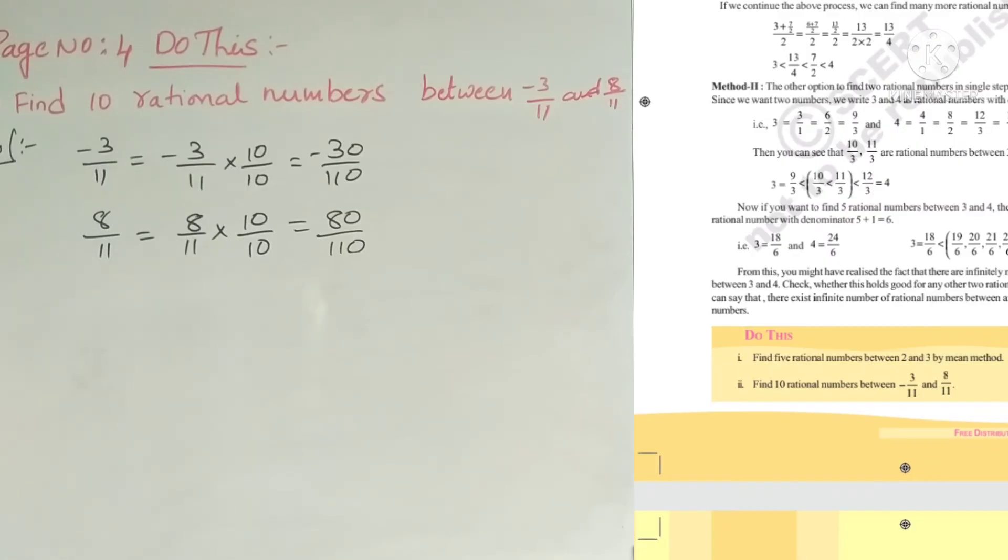So 8 by 11 also multiply by 10 by 10 gives 80 by 110. So now we need rational numbers between minus 3 by 11 and 8 by 11, which is equivalent to minus 30 by 110 and 80 by 110.